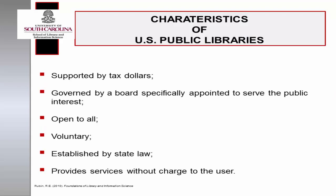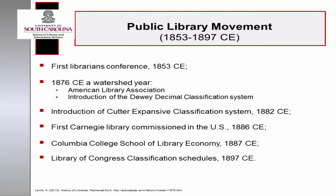Today, public libraries in the United States share certain fundamental characteristics: they are supported by tax dollars, governed by a board specifically appointed to serve the public interest, open to all, voluntary, established by state law, and provide services without charge to users. The public library movement began in 1853 CE with the first librarians' conference. After the Civil War, the library movement spread rapidly across the country.